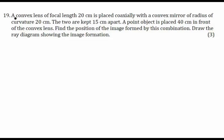In this example, we are given that a convex lens of focal length 20 centimeters is placed coaxially with a convex mirror. That means the convex lens and the convex mirror share the axis, so they are coaxial to each other. The radius of curvature is 20 centimeters for the convex mirror, so indirectly the focal length is plus 10 centimeters. The two are kept 15 centimeters apart and a point object is placed 40 centimeters in front of the convex lens.